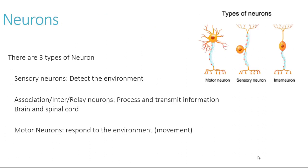The different types of neurons that we have are motor neurons, sensory neurons, and interneurons, which might also be referred to as association or relay neurons. As you can see from the diagrams, they might be arranged in slightly different ways, but they do contain all of those features we just spoke of.